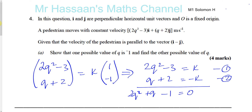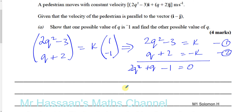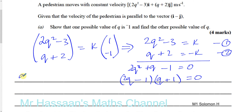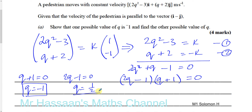And there we have a quadratic equation: 2q² + q - 1 = 0, which is easy to solve. This can be factorized very easily: (2q - 1)(q + 1) = 0. So either q + 1 = 0, giving q = -1 — that's one solution — or 2q - 1 = 0, giving q = 1/2. That's your second solution. q = -1 is the value they asked us to show, and q = 1/2 is the other solution. That's the answer to part A.